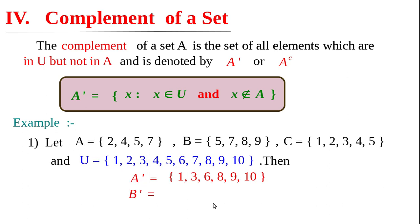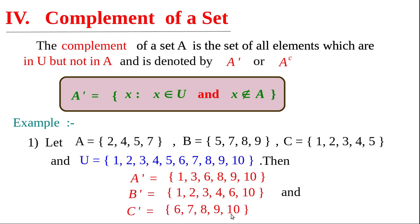Now write B dash and C dash yourself after pausing the video. You may get: B dash = {1, 2, 3, 4, 6, 10} and C dash = {6, 7, 8, 9, 10}.